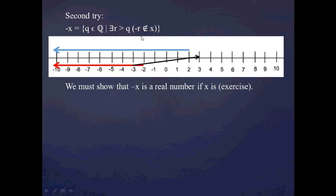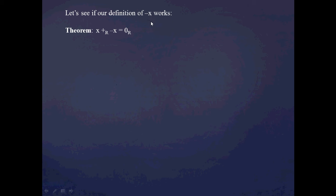One thing we're going to have to show is that if x is a real number, then negative x is also a real number — that is, it's a Dedekind cut. I encourage you to do that as an exercise. What I'd like to verify is that this definition of negative x actually works as an additive inverse — that x plus negative x gives me zero. So let's show that.